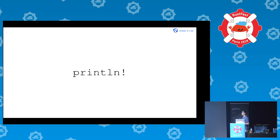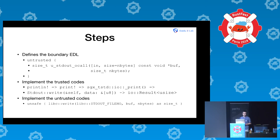Now, let's look at the print line sample. The steps are straightforward. First, I need to partition. For the partition step, I need to define the boundary using EDL syntax defined by Intel, very similar to C. The first line is 'untrusted', which declares an o-call function. This enables code inside the SGX enclave to make an outside call to the untrusted world, write to stdout, and get back to the trusted world.